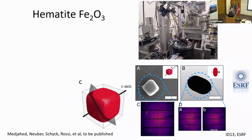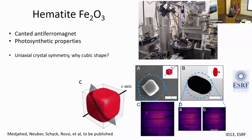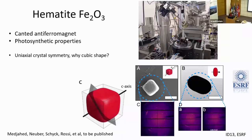We looked at hematite iron oxide particles, which are very interesting for their magnetic properties. They are a canted antiferromagnet with relatively low magnetization per volume, but these particles — about a micrometer in size — have sufficient dipole moments so they start to feel each other, and thus have magnetic interactions affecting the self-assembly process.